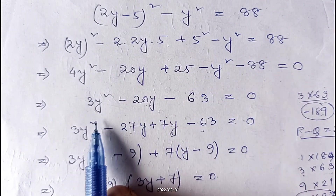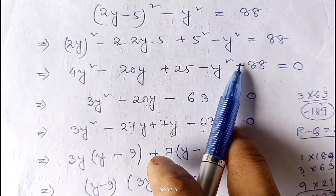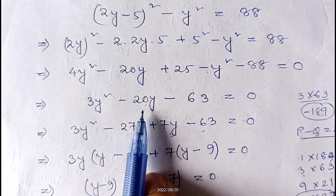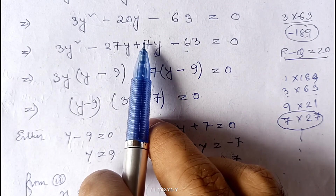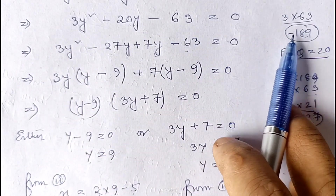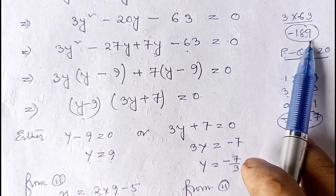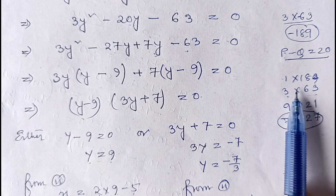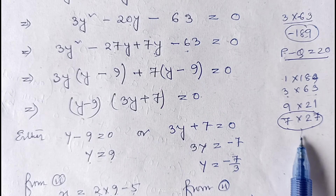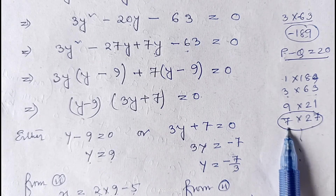So 4y² − y² = 3y², giving us 3y² − 20y + 25 − 88 = 0, which becomes 3y² − 20y − 63 = 0. Solving by middle-term factorization: multiply coefficient of y² by the constant: 3 × (−63) = −189. Since the product is negative, we need two numbers whose difference is 20. Factorizing 189: 1×189, 3×63, 9×21, 7×27. Since 27 − 7 = 20, we use 27 and 7.